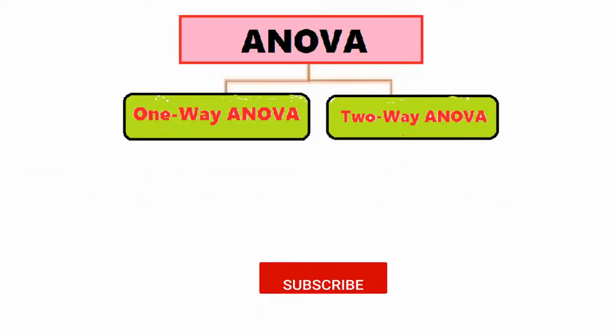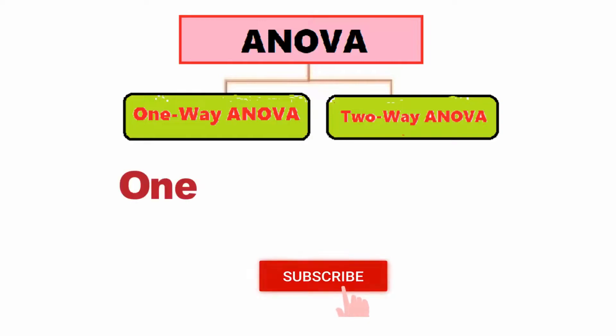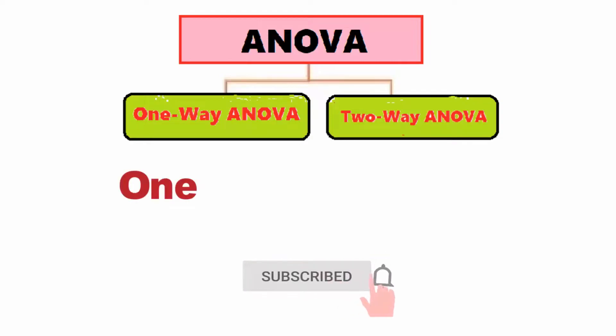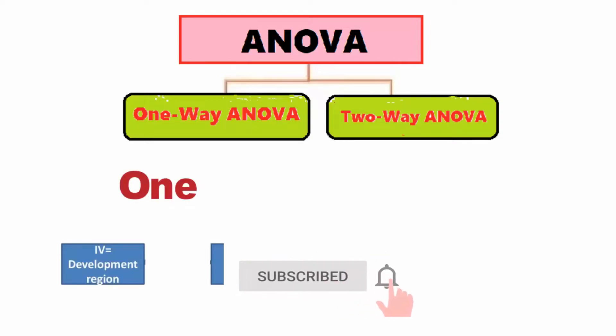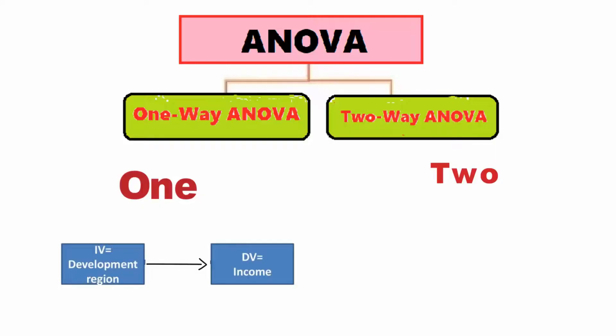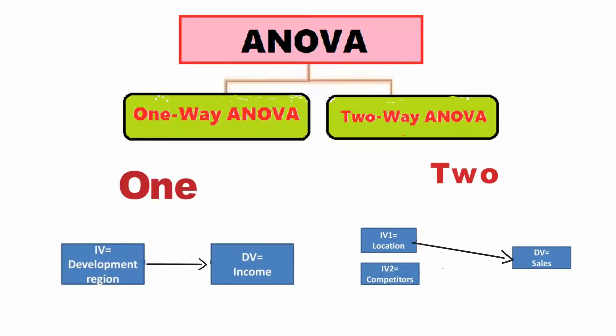Two — Independent variables: there is only one factor or independent variable in one-way ANOVA, whereas in the case of two-way ANOVA there are two independent variables.